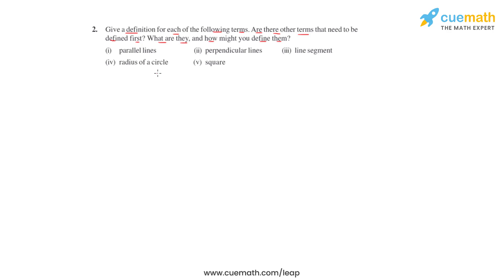Now let's get on to the terms that we have in this question. We start with parallel lines. If the perpendicular distance between two lines is always constant, that is it remains same, then these are called as parallel lines.